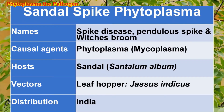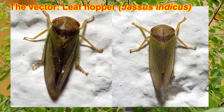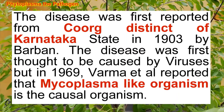One form is called pendulous spike and the other one is witch's broom. This disease is caused by a mycoplasma, also called phytoplasma, and it is spread by a vector called the leaf hopper Jassus indicus. This disease was first reported in Karnataka in the Coorg district in 1903, but at that time it was thought to be a viral disease. Later, an Indian scientist by the name of Verma discovered that the disease is actually caused by mycoplasma-like organisms.